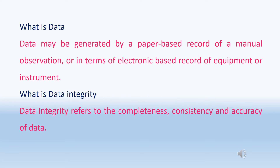What is data? Data may be generated by a paper-based record of a manual observation or an electronic-based record of equipment or instrument. Data can range from a receipt generated by simple machines to records of complex computerized systems. For example, not only the spectrum obtained during UV analysis, but also the sample weight printouts from a weighing balance are data. Paper-based batch manufacturing records, batch packing records, dispensing records, and calibration records are also data.